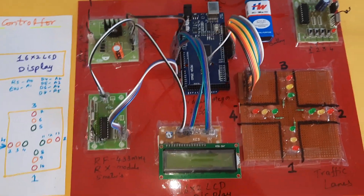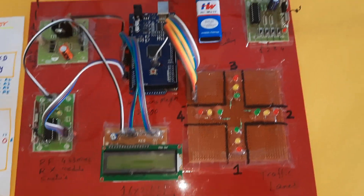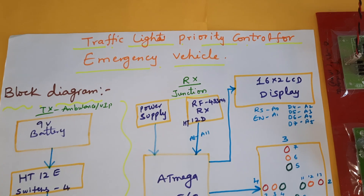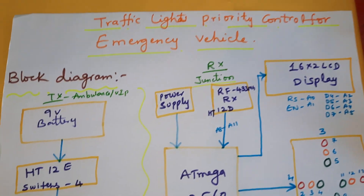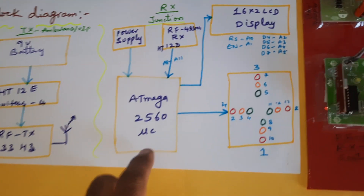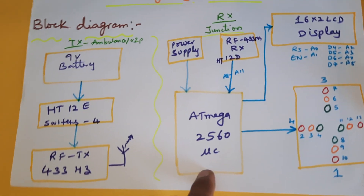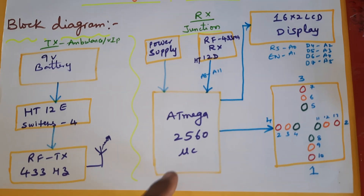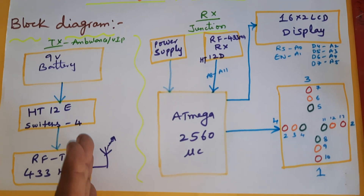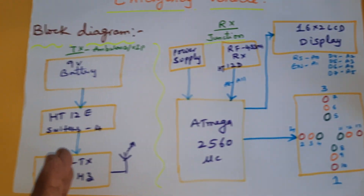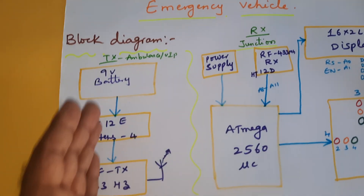Hi, we are from SVS Embedded. The project title is Traffic Light Priority Control for Emergency Vehicle using Arduino Mega 2560 board. We are using one transmitter part and one receiver part.